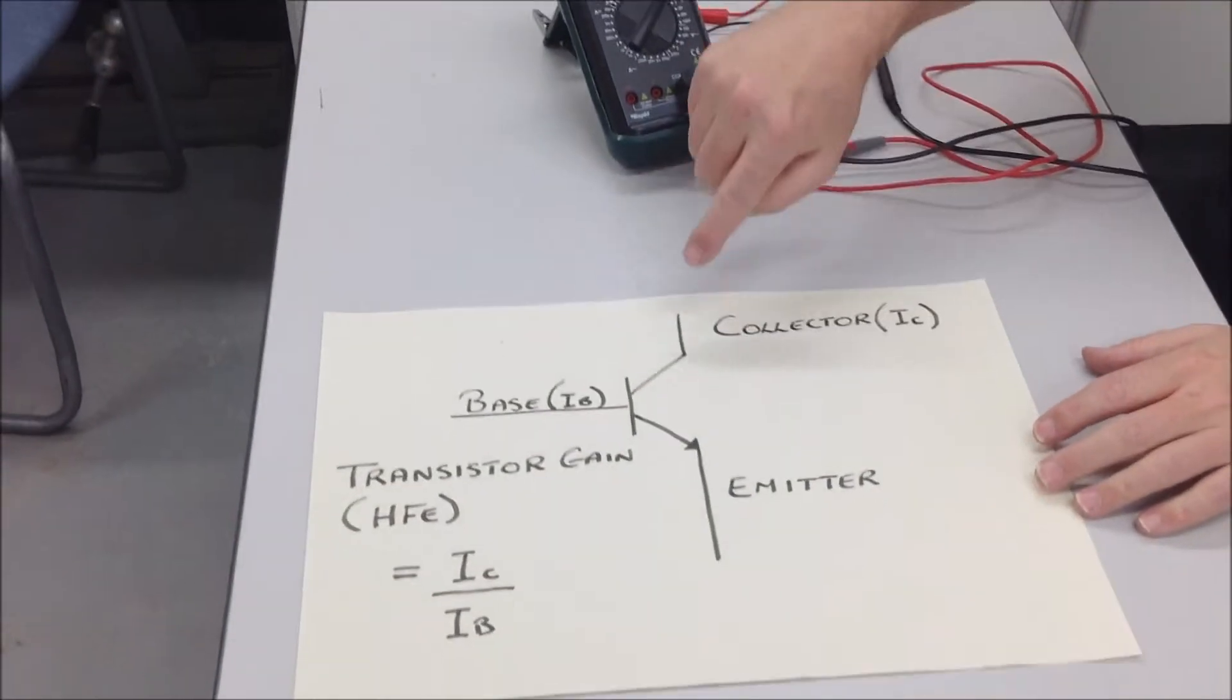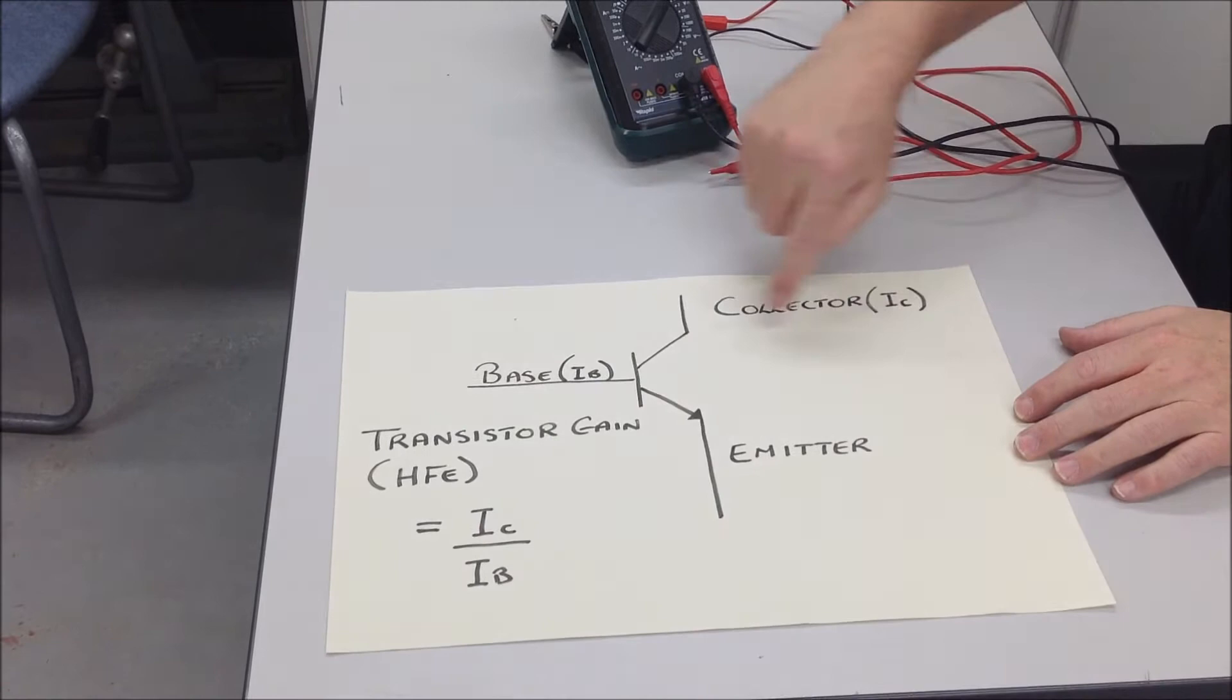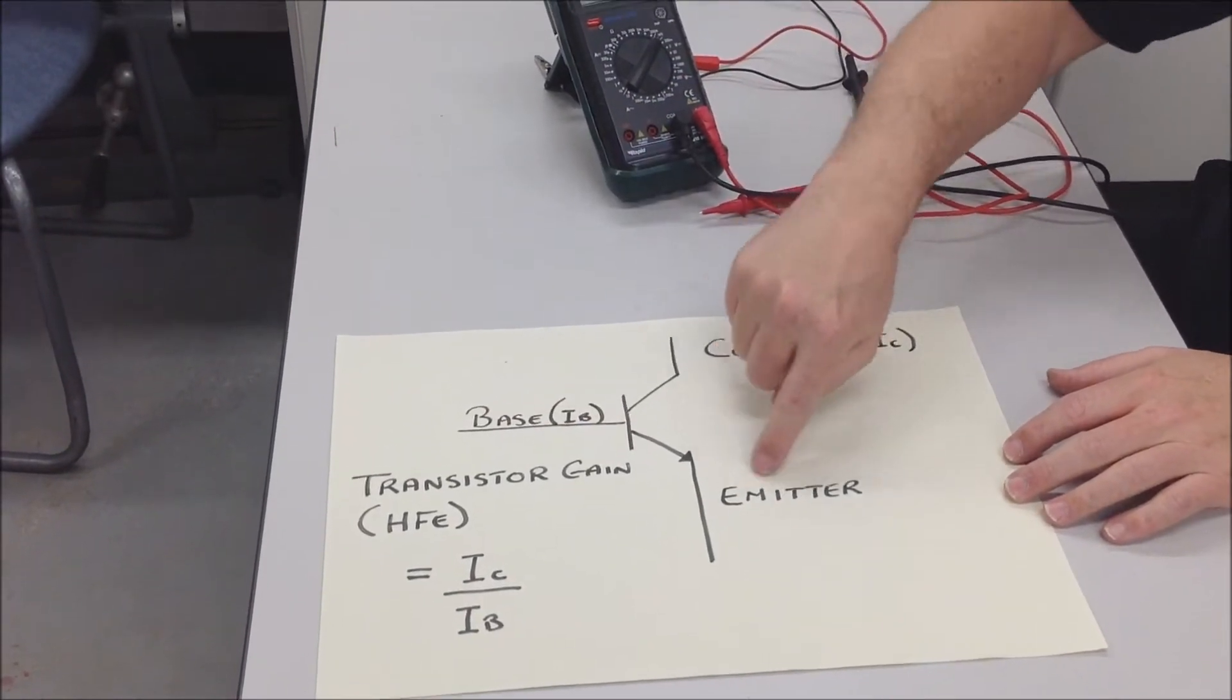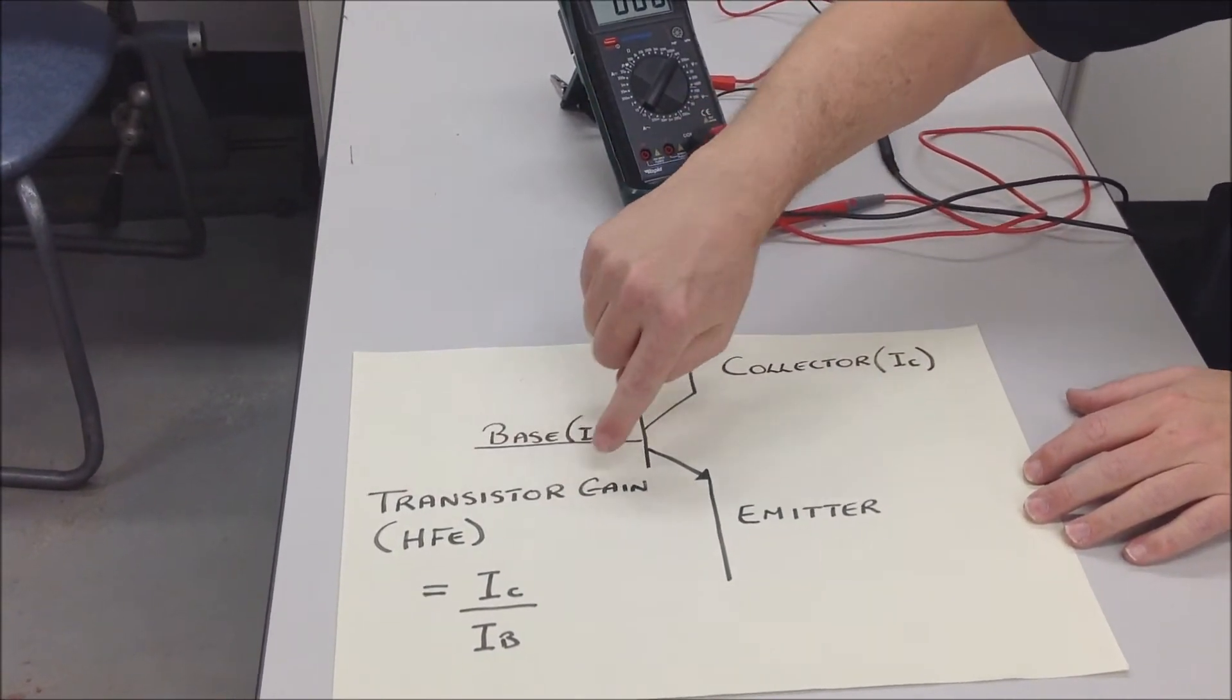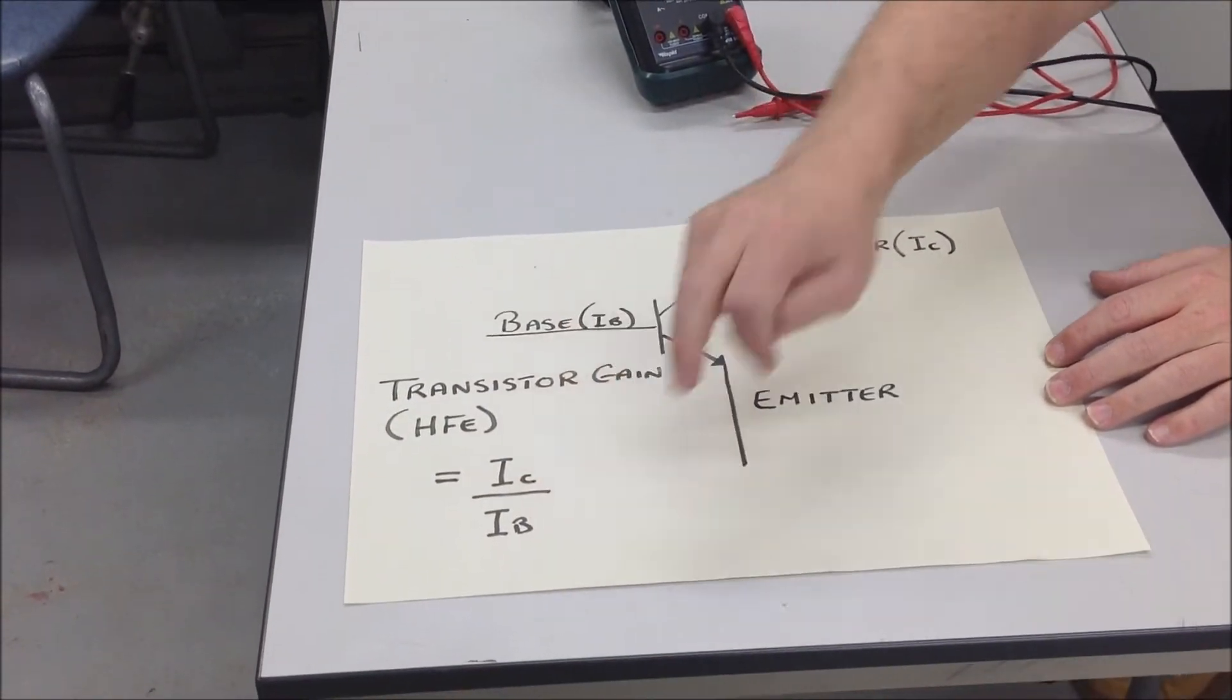Now, if we look at a transistor, this is the symbol for a transistor. We have a base, a collector and an emitter. And the gain is the amount, is the ratio of collector current to base current.